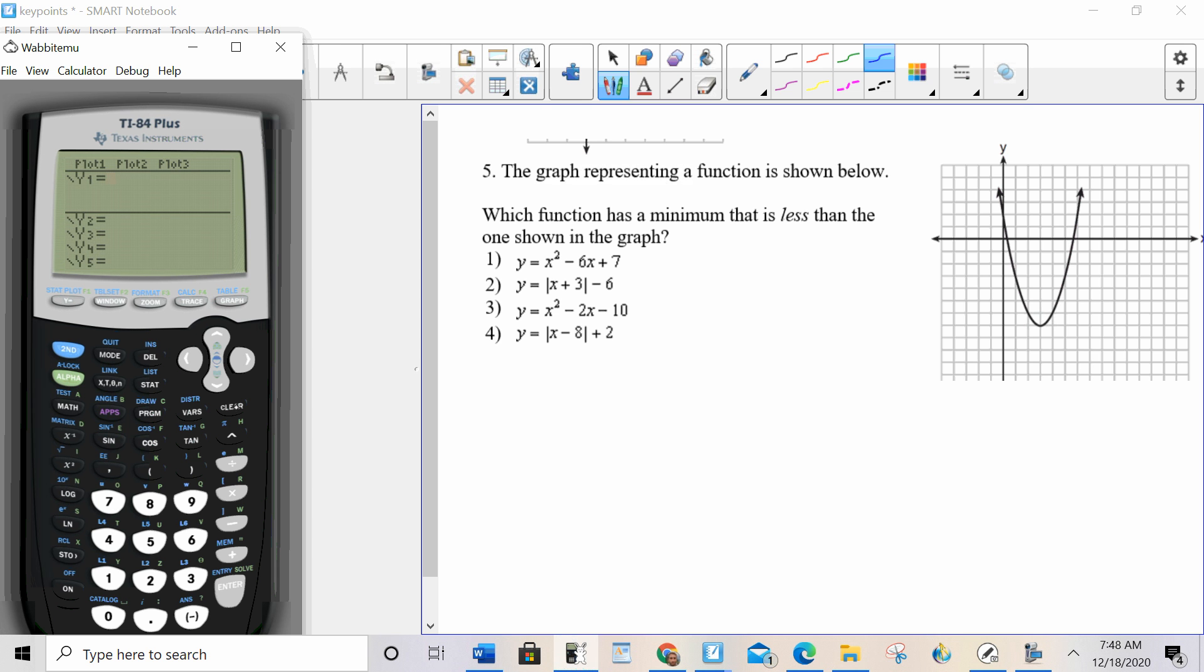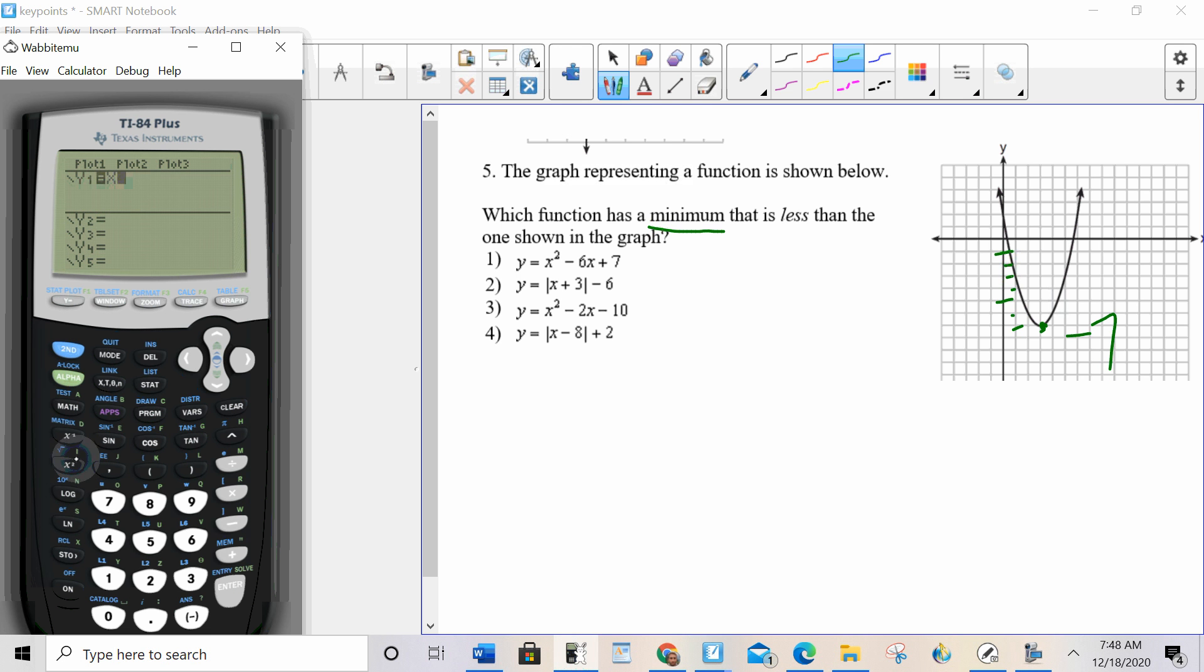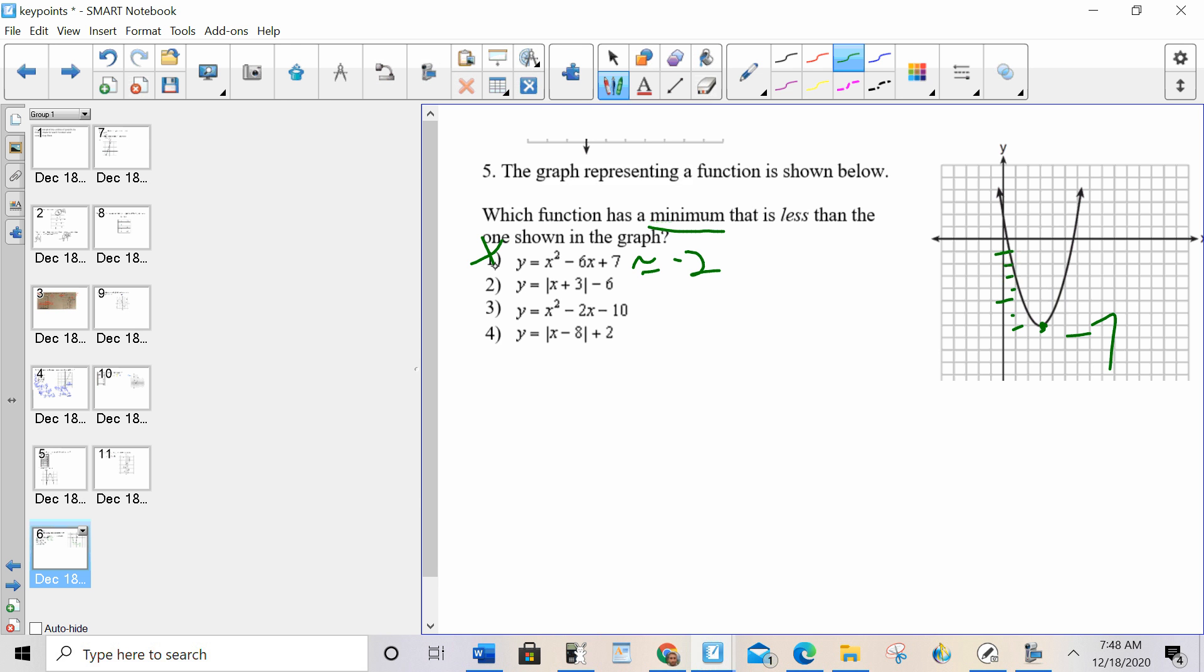Okay, now that you tried number 5 on your own, let's go over it. Which function has a minimum that is less than the one shown on the graph? Well, the one shown on the graph is negative 1, 2, 3, 4, 5, 6, 7. So I'm going to go through the choices and see what my minimums look like. Choice 1 is x squared minus 6x plus 7. Graph zoom 6. That is definitely not less than negative 7. That looks like negative 2, maybe. I'm going to say approximately negative 2. That's definitely not less than negative 7.